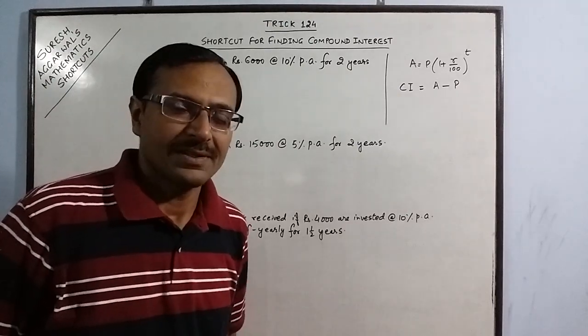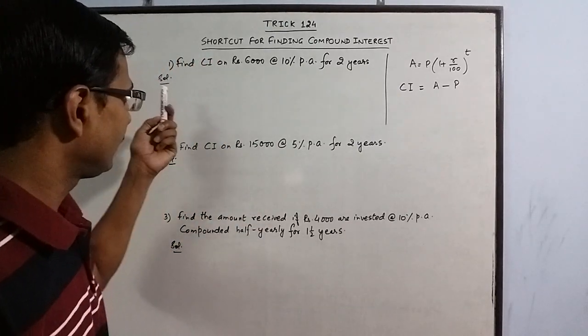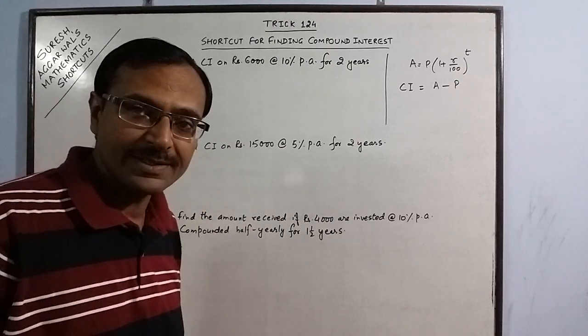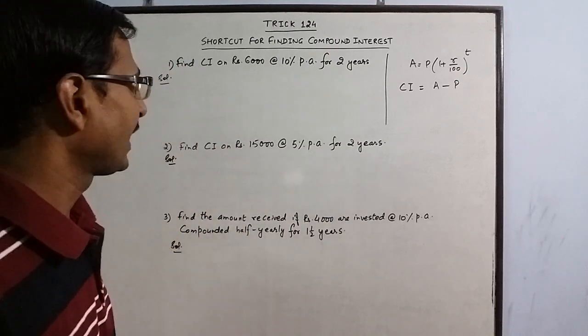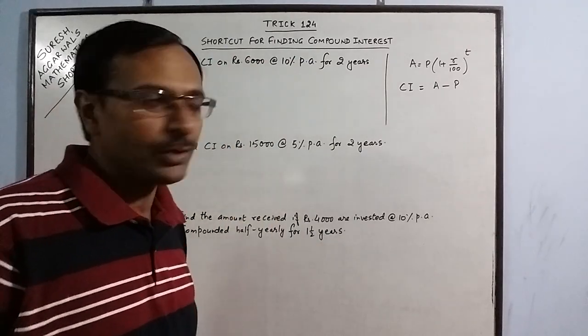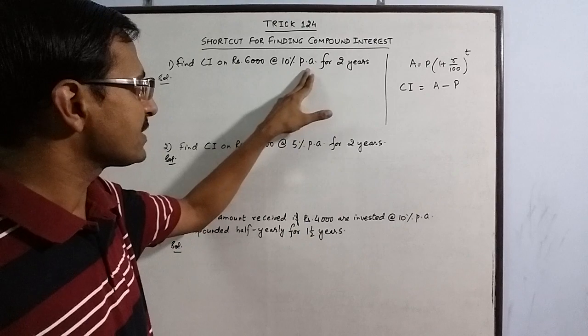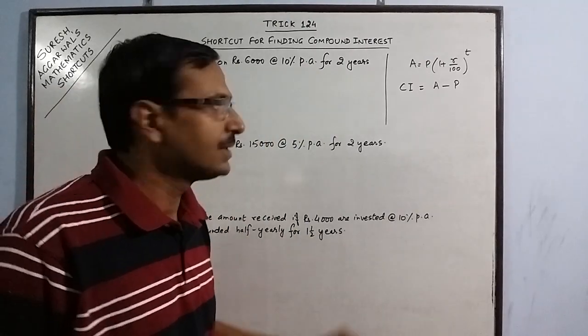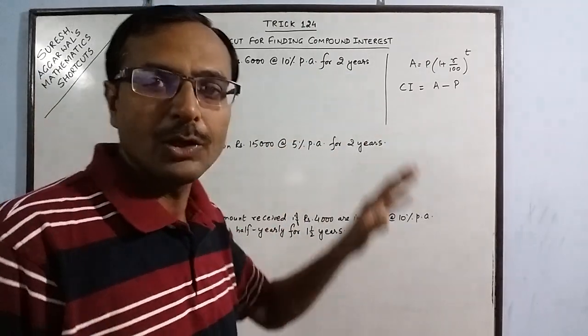Let us try and understand the concept of compound interest through this question. We have to calculate the compound interest on Rs. 6000, this is the principal amount, at the rate of 10% per annum, and the time is 2 years.